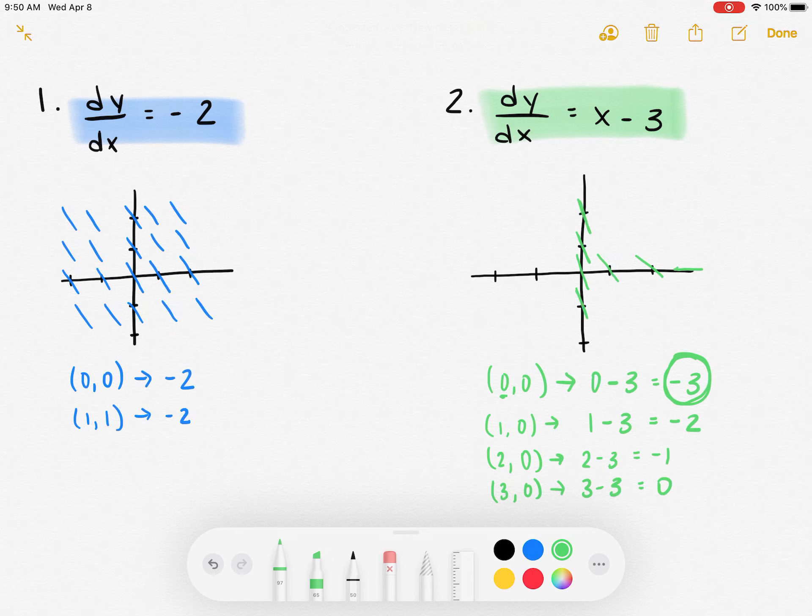Which tells me that all of these slopes are going to be the exact same, moving up and down, because there is no y value, so it doesn't matter what my y value is. It just matters what my x value is.